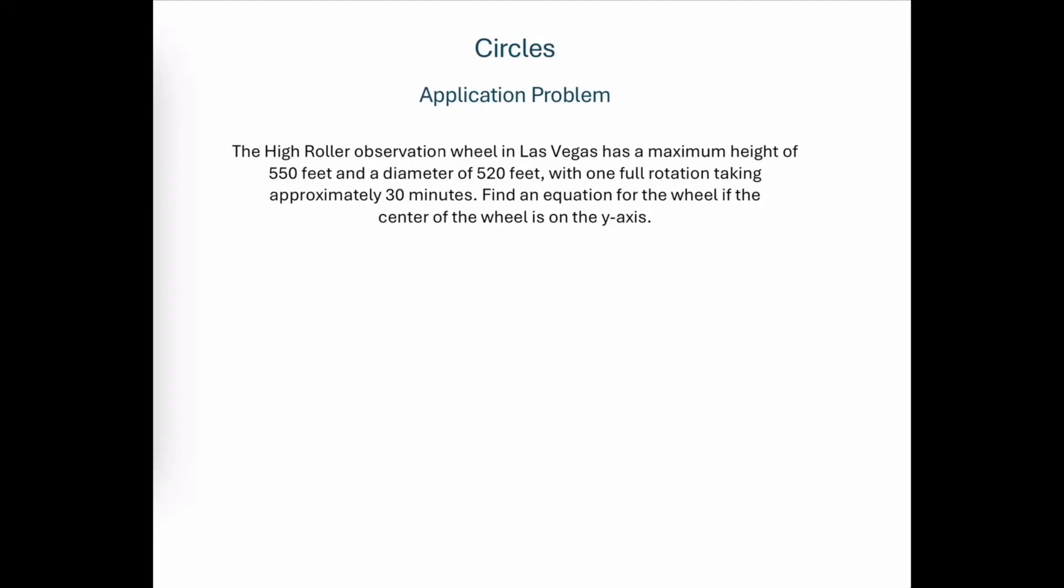The High Roller observation wheel in Las Vegas has a maximum height of 550 feet and a diameter of 520 feet with one full rotation taking approximately 30 minutes. Find an equation for the wheel if the center of the wheel is on the y-axis.